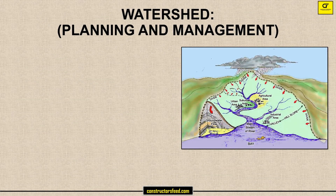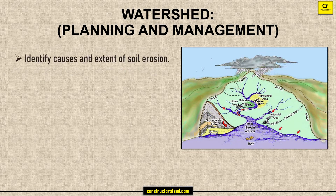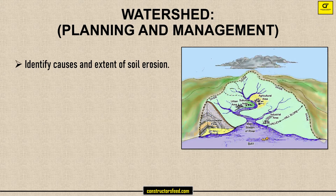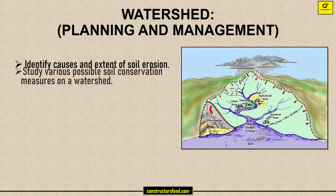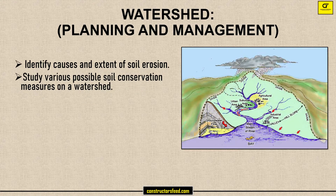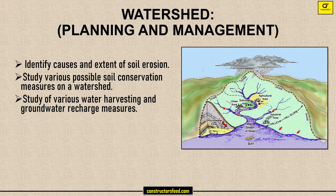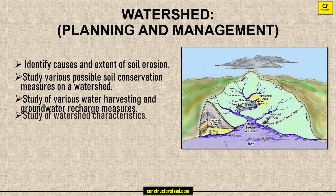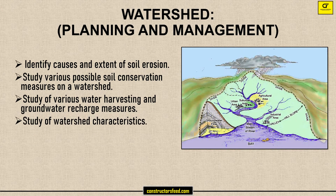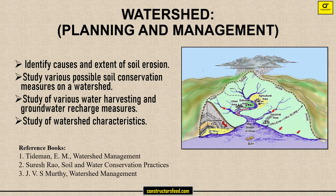Watershed Planning and Management: Identify Causes and Extent of Soil Erosion; Study Various Possible Soil Conservation Measures on a Watershed; Study of Various Water Harvesting and Ground Water Recharge Measures; Study of Watershed Characteristics. These are the reference books.